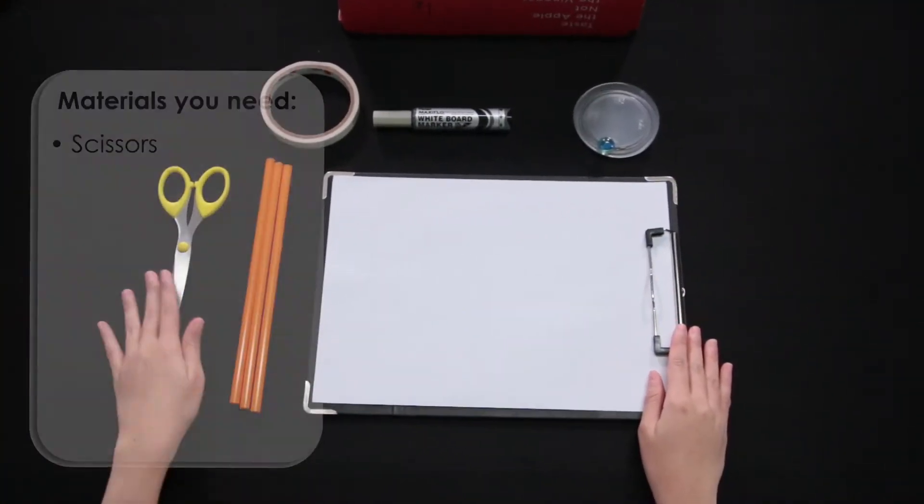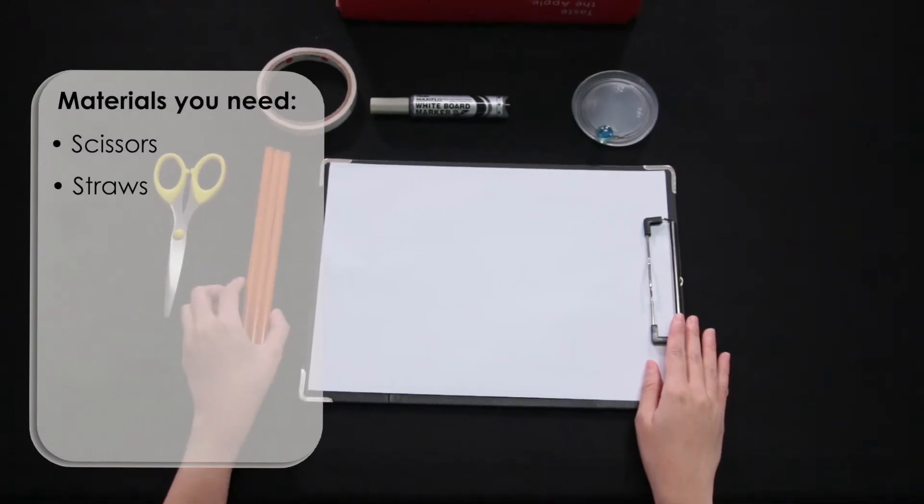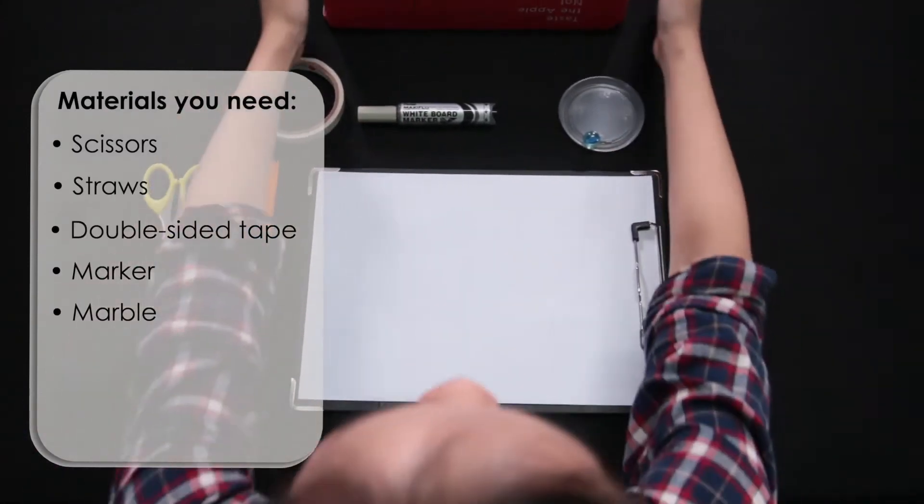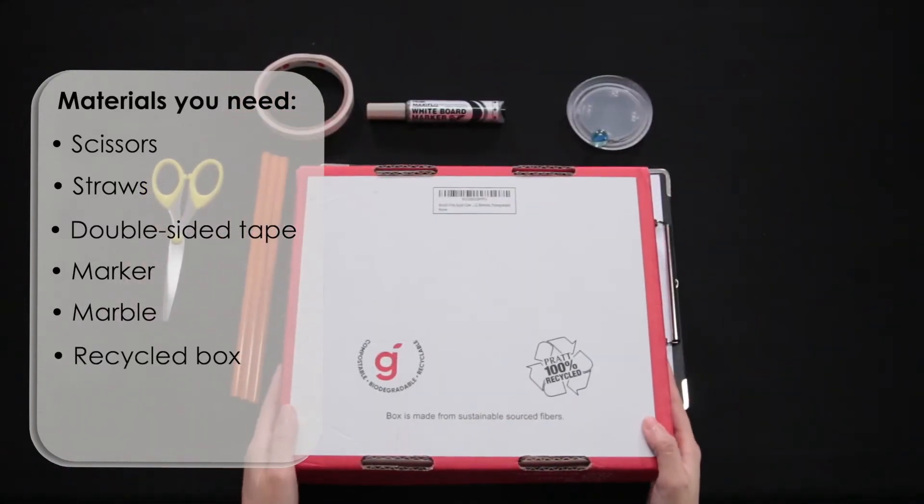These are the materials you need: a pair of scissors, some straws, double-sided tape, marker, a marble, and also a recycle box.